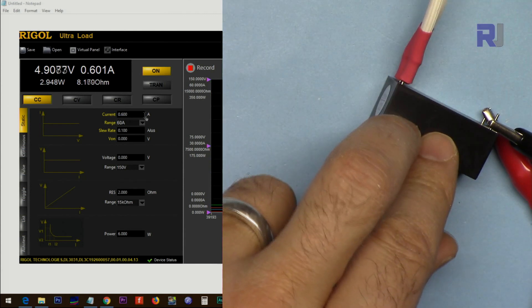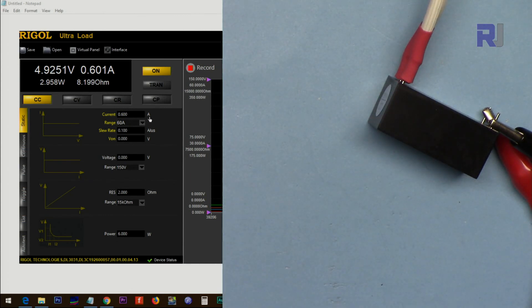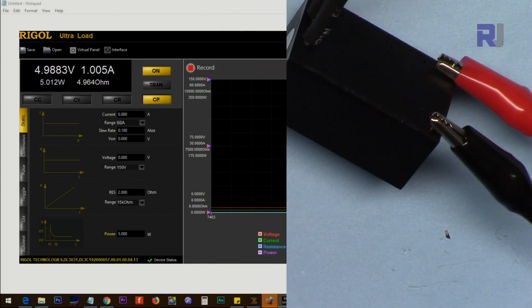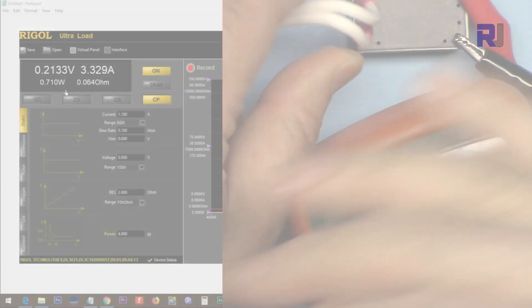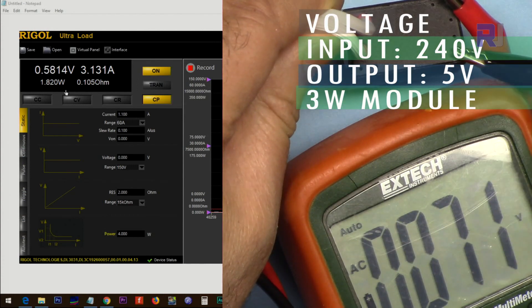Let me increase it by 100 milliamp. That is 0.7 ampere, still holding but the voltage dropped. After 30 minutes of tests, still stable and going.